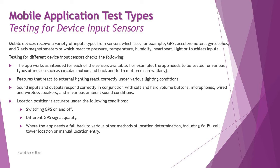When it comes to device input sensors, we are talking about the several sensors which are inbuilt within devices, including the keyboard, touch, and other specific sensors for locations and calibration. Mobile devices receive a variety of input types from sensors — for example GPS, accelerometers, gyroscopes, and three-axis magnetometers — which react to pressure, temperature, humidity, heartbeat, light, or touchless inputs.